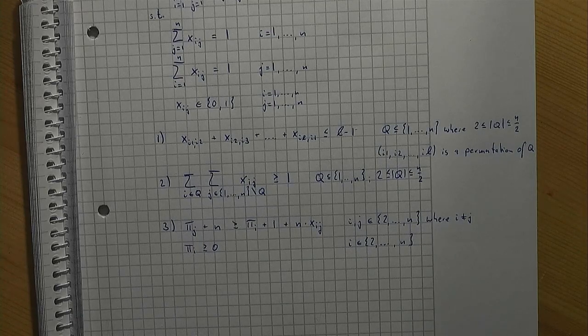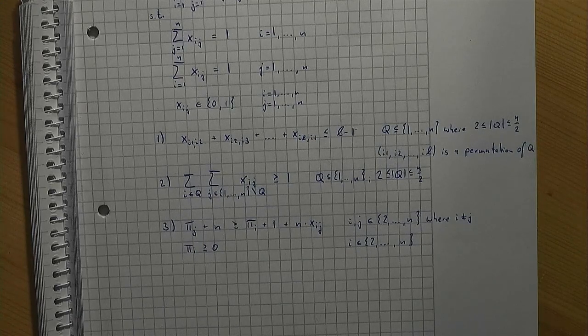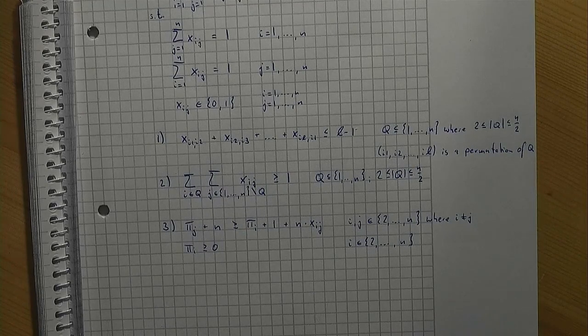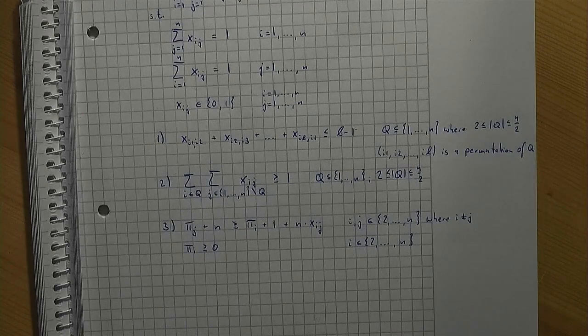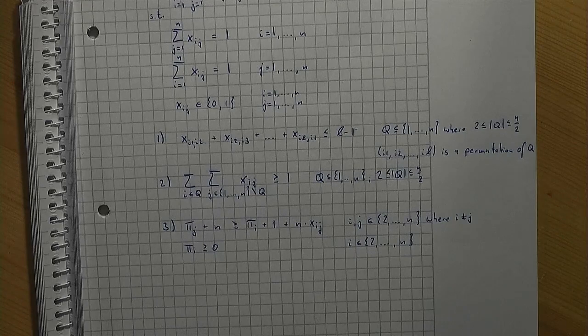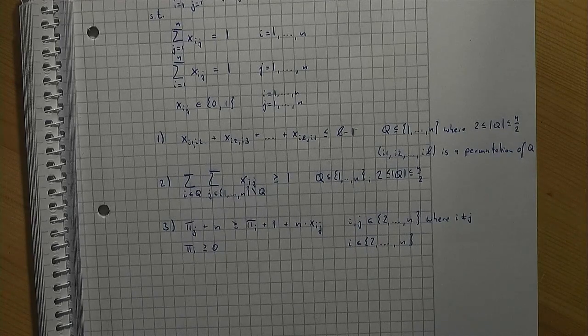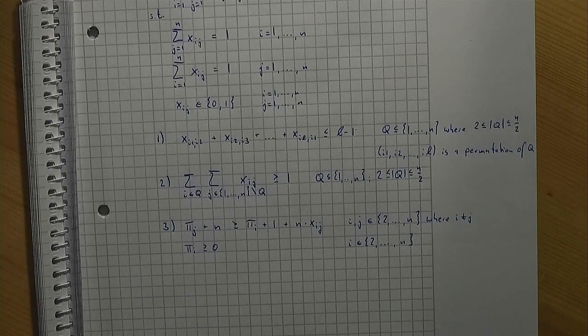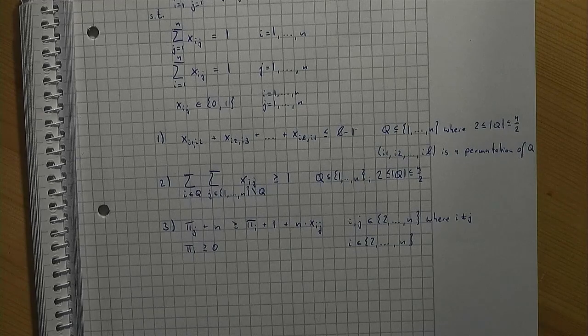This, however, means that if we travel from location i to location j, then the position number of location j must be at least one larger than the position number of location i. In the literature, this formulation is known as the Miller-Tucker-Zemlin formulation.